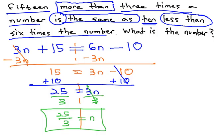We now know that 15 more than 3 times 25 thirds is the same as 10 less than 6 times 25 thirds.